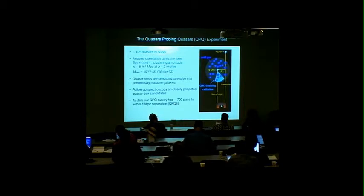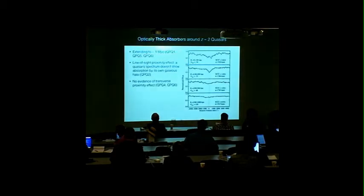which intercepts the foreground quasar's halo at an impact parameter R-perp. From this Sloan quasar catalog, we select candidates of closely projected quasar pairs, and then we confirm them with follow-up spectroscopy. To date, our QPQ survey has found 700 pairs to within 1 megaparsec separation, and we recorded the observation journal in QPQ6.